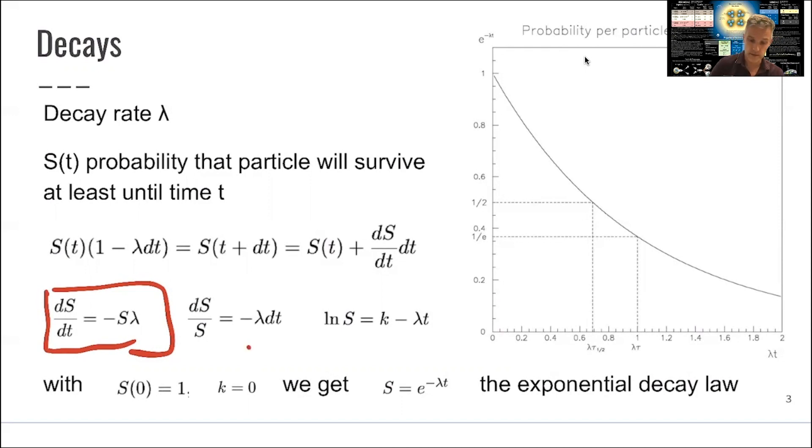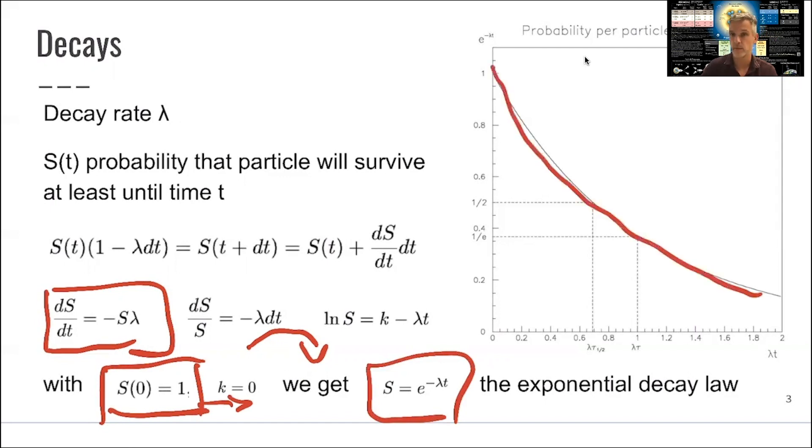Now if we integrate this, we find that the log of this probability is equal to some constant minus lambda times time. If you simply assume that the particle existed at the initial time t, we find this very famous exponential decay law, e to the power of minus lambda t, shown here in this picture as this exponential decay.